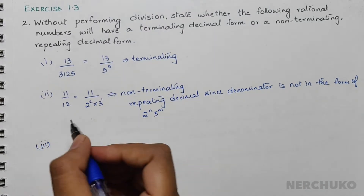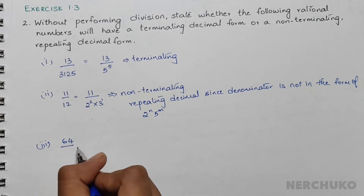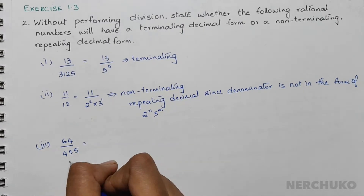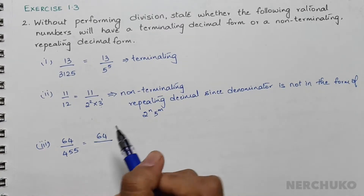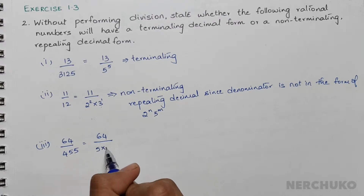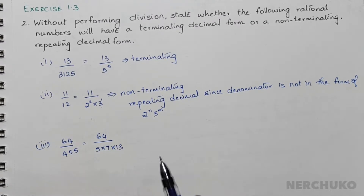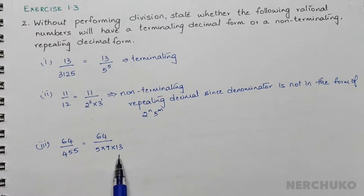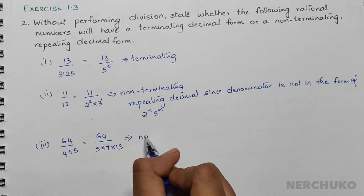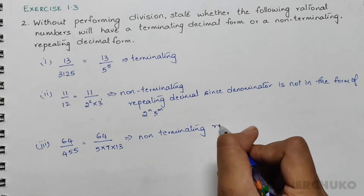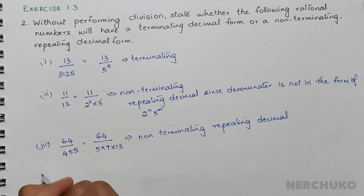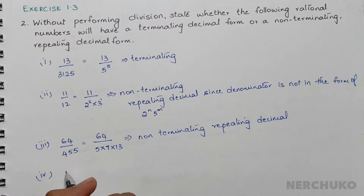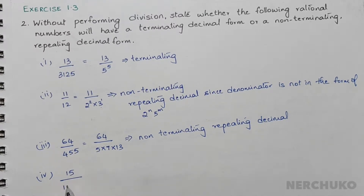For the third bit, we have 64 divided by 455. The prime factors of 455 are 5 × 7 × 13. Since the denominator is not in the form of 2^n × 5^m, we will have a non-terminating repeating decimal.